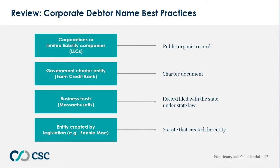Corporate debtor name best practices. Subjects include corporations, LLCs, and other entities. For corporations or LLCs, verify using the public organic record — that is, formation documents. For a government charter entity like a farm credit bank, obtain the charter document. For business trusts, such as those in Massachusetts, retrieve the record filed with the state under state law. For any entity created by legislation, like Fannie Mae, find the statute that created the entity.